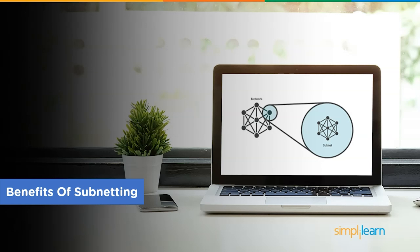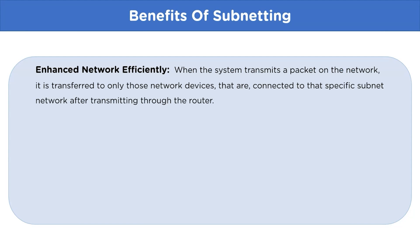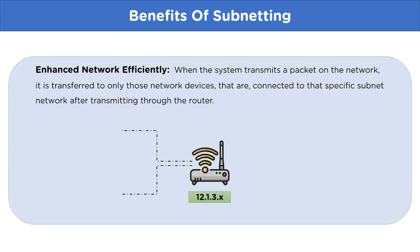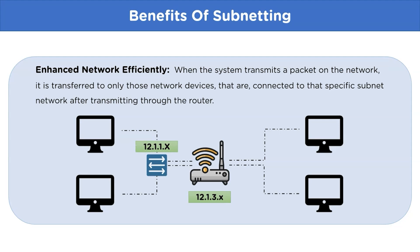Let's move on to the benefits of using subnetting. The first benefit is enhanced network efficiency. Through subnetting we can share data to a specific portion of the network rather than broadcasting to the whole network, which causes unnecessary traffic. For example, if we have four different hosts and want to share data to only two of them, we can subnet them into specific parts, so the router sends data only to that specific subnetwork. This prevents network traffic congestion.